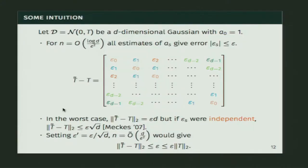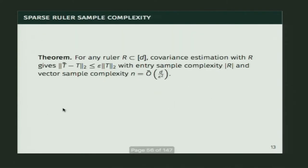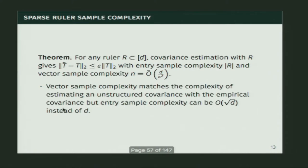The key assumption that is clearly incorrect is that I said all the estimates are independent — they're not, especially when measuring with a sparse ruler. The difficulty is understanding this independence assumption. But what we show is that for any ruler, if we do this estimation procedure, the intuition that they're independent actually holds and gives the right bound. For any ruler we get epsilon error, with entry sample complexity equal to the size of the ruler and vector sample complexity d / epsilon^2 — matching what you get for general covariance estimation but doing much better in entry sample complexity.